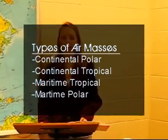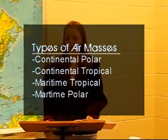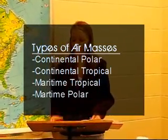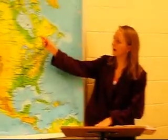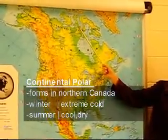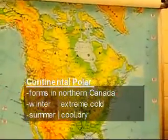We have four different types of Air Masses: Continental Polar, Continental Tropical, Maritime Tropical, and Maritime Polar. The first one is the Continental Polar. It is found in northern Canada. In the winter it brings very cold weather, and in the summer it's very cold and dry.